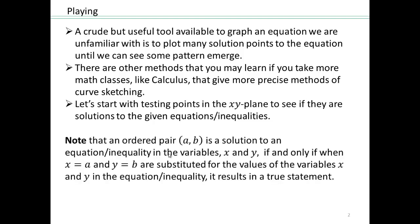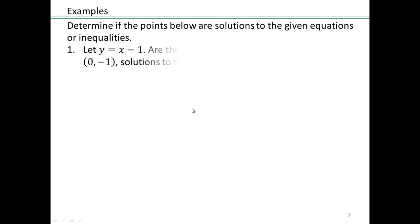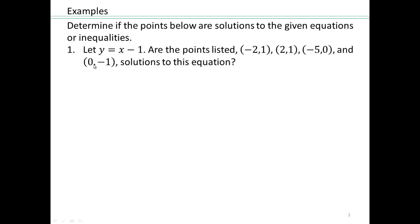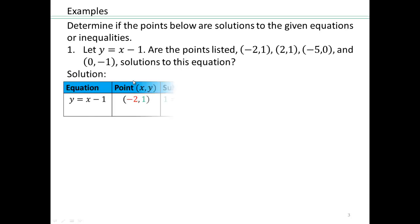In order for a point in an xy plane, (a, b) — remember a is the x coordinate and b is the y coordinate — to be a solution to an equation or inequality, we replace a for x and b for y in the equation. If you end up with a true statement, then the point (a, b) is a solution to that equation or inequality. Let's take some concrete examples. We are asking: are these four points solutions to the equation y equals x minus 1? Let's make a table because that will make it easy for us to see.